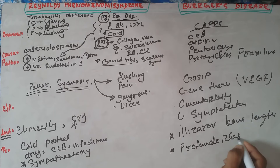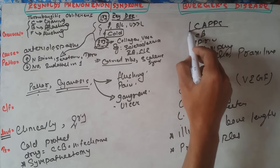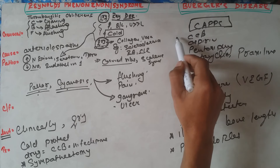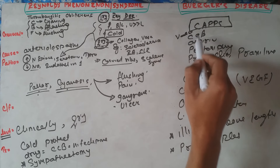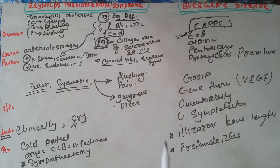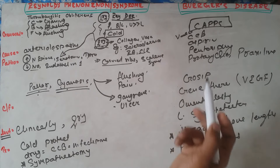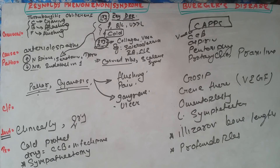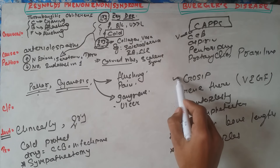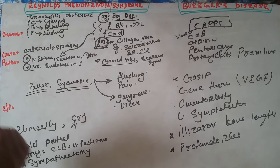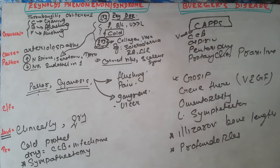To summarize the treatment: calcium channel blockers act as vasodilators, aspirin prevents clot formation, and pentoxifylline increases the fragility of RBCs to prevent issues during microcirculation. The surgical CAPS options are the surgical treatment modalities. This is all about Raynaud's phenomenon and Buerger's disease.